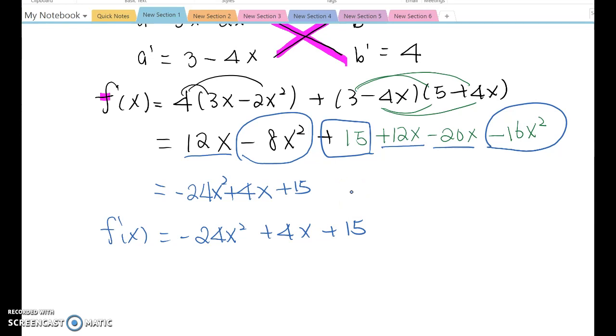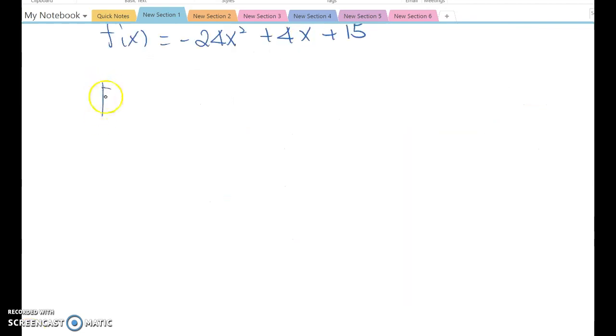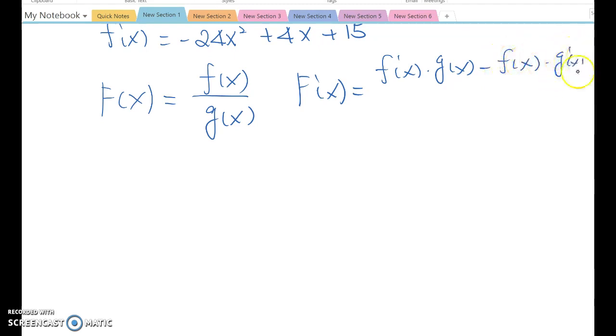Now let's think about the quotient rule. If the function form f(x) equals f(x) over g(x), then f prime x equals f prime x times g(x) minus f(x) times g prime x, all over g(x) squared. That is the quotient rule, but this one also looks a little bit complicated, so I'm going to simplify using different notation.